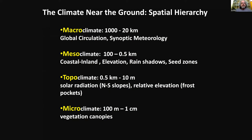By climate, we have to define what scale we're looking at. The macroclimate involves global circulation and synoptic meteorology — like the difference between northern and southern California. The mesoclimate covers coastal-inland gradients, elevation gradients, and rain shadows — this is the scale at which seed zones are really laid out. The topoclimate gets to fine-scale terrain factors like solar radiation on north versus south slopes, relative elevation, and frost pockets. Finally, we get down to the true microclimate, which is vegetation canopies and other fine-scale surface features.